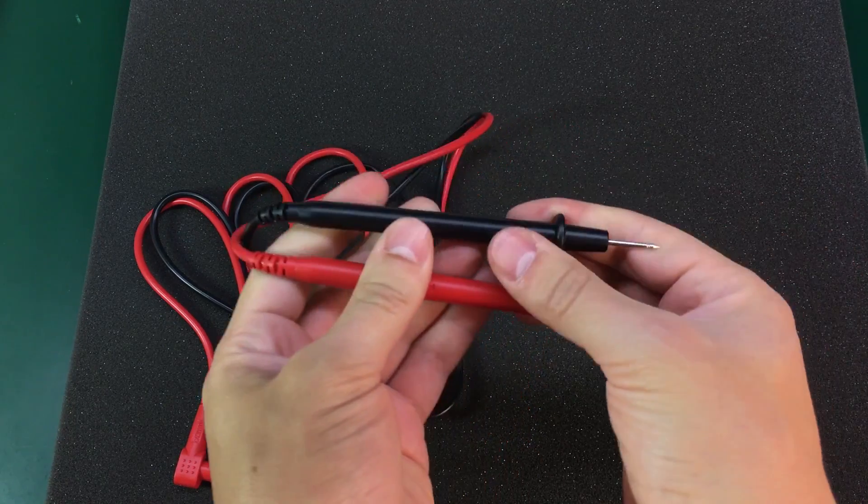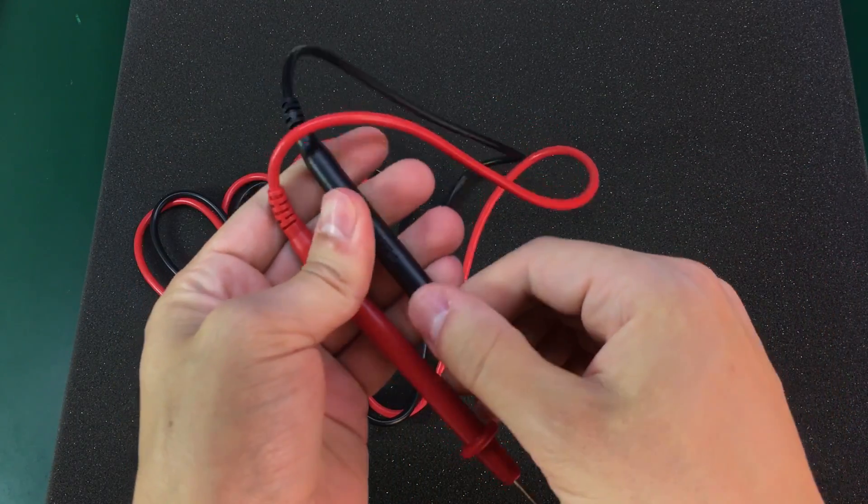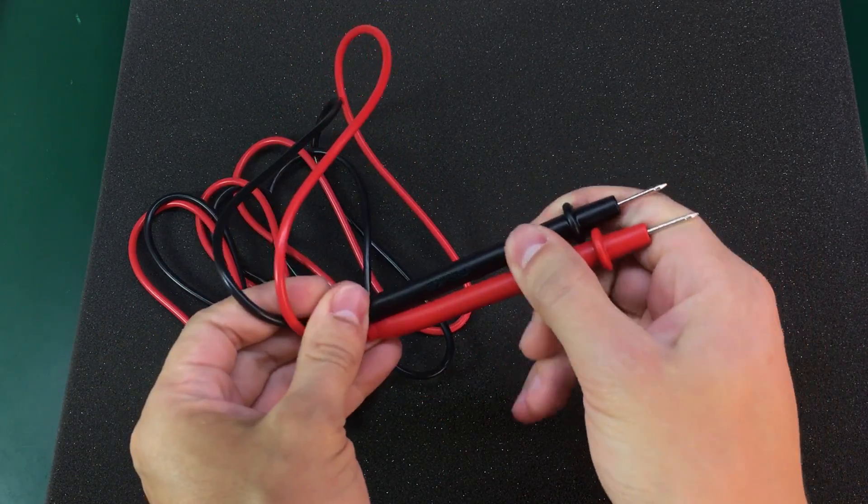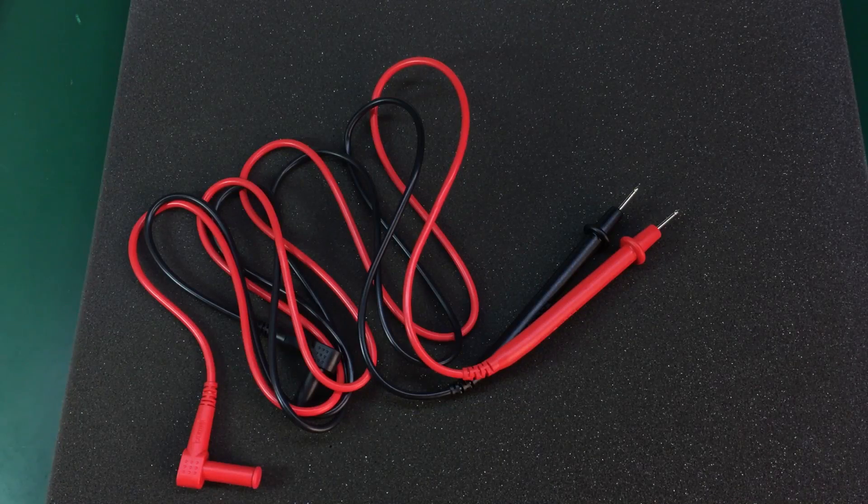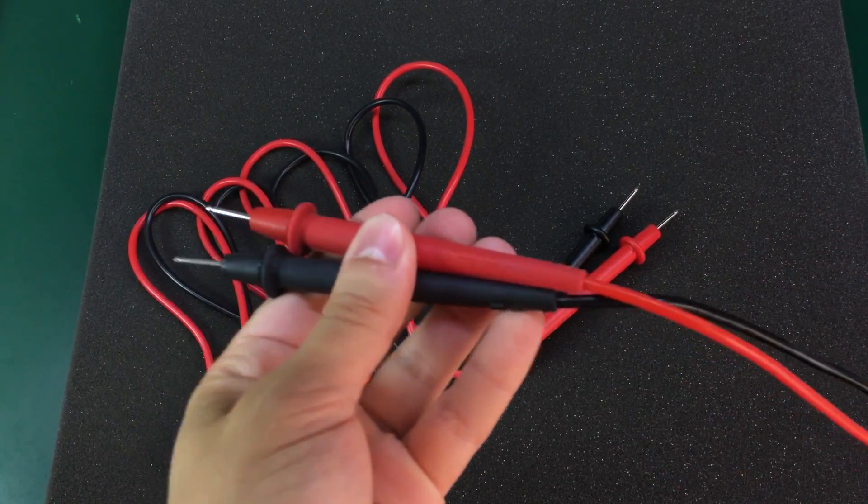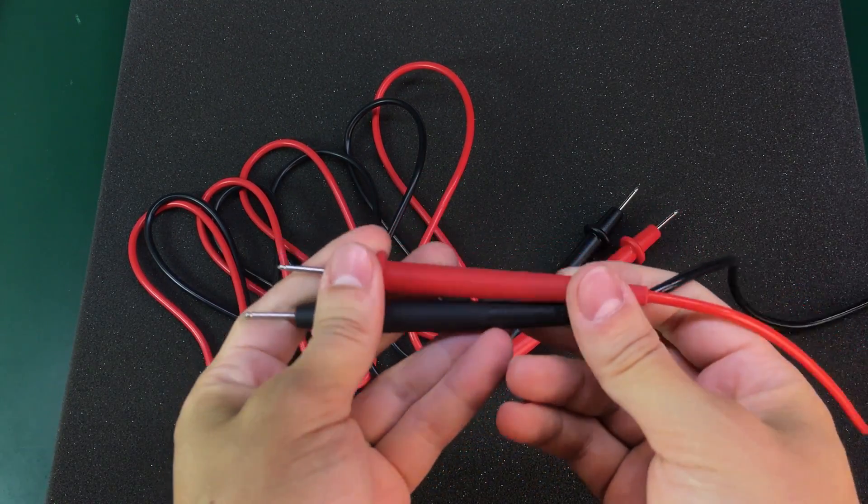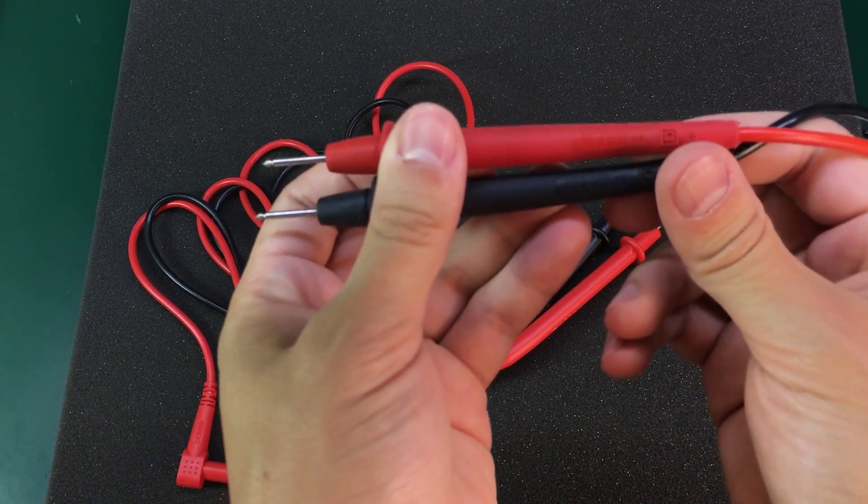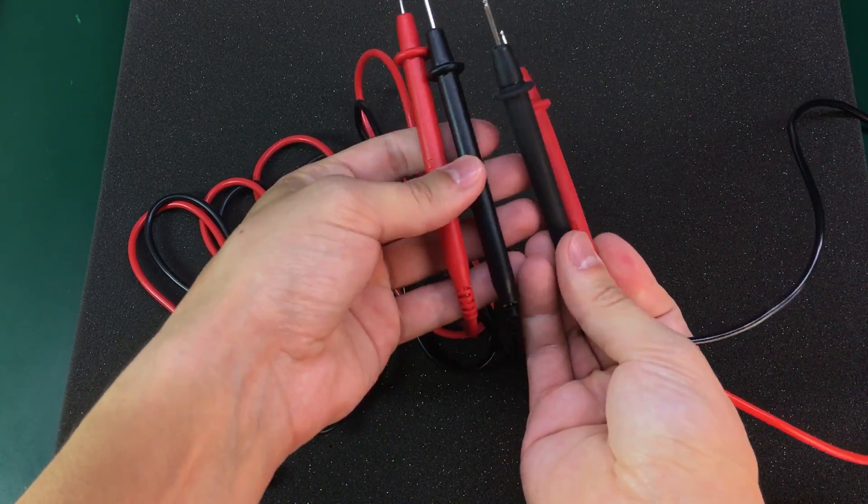These handles do seem a bit plasticky. They are not as soft as some original Fluke probes that I have. Let me get those. So this is an original pair of Fluke probes that came with my Fluke 87.5. I don't think these are the TL10 model, but they are certainly softer than these ones.